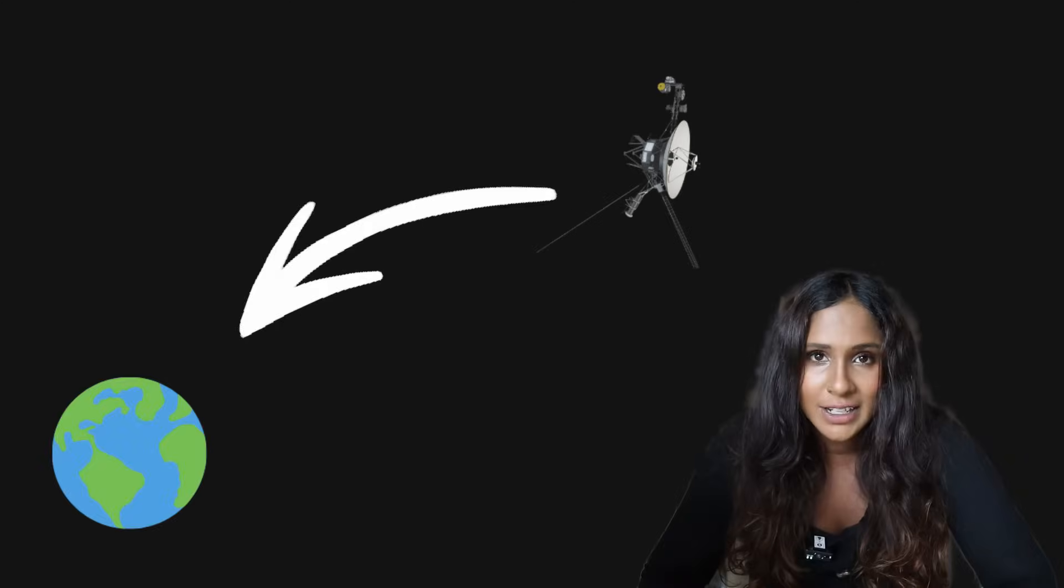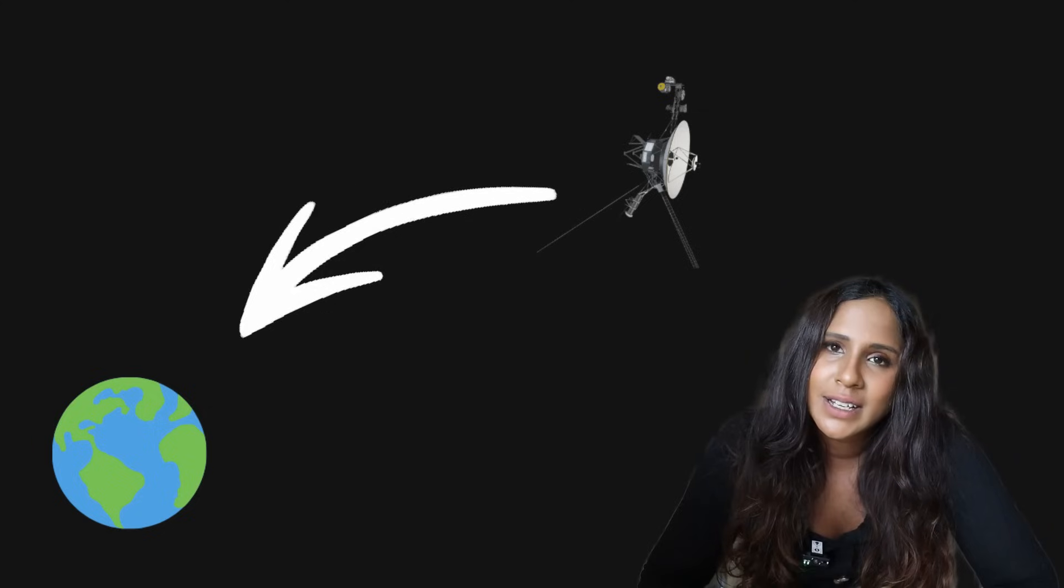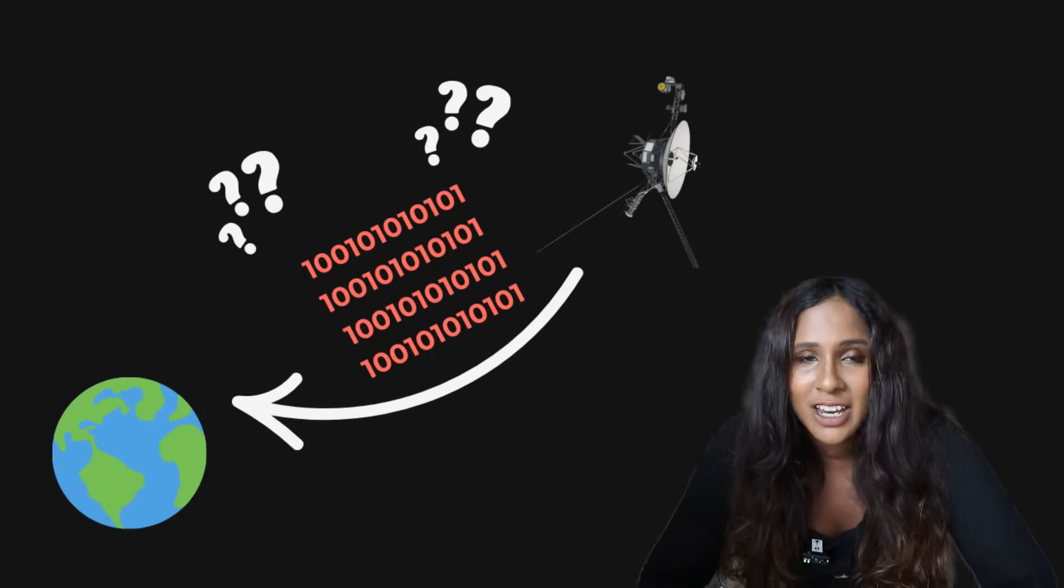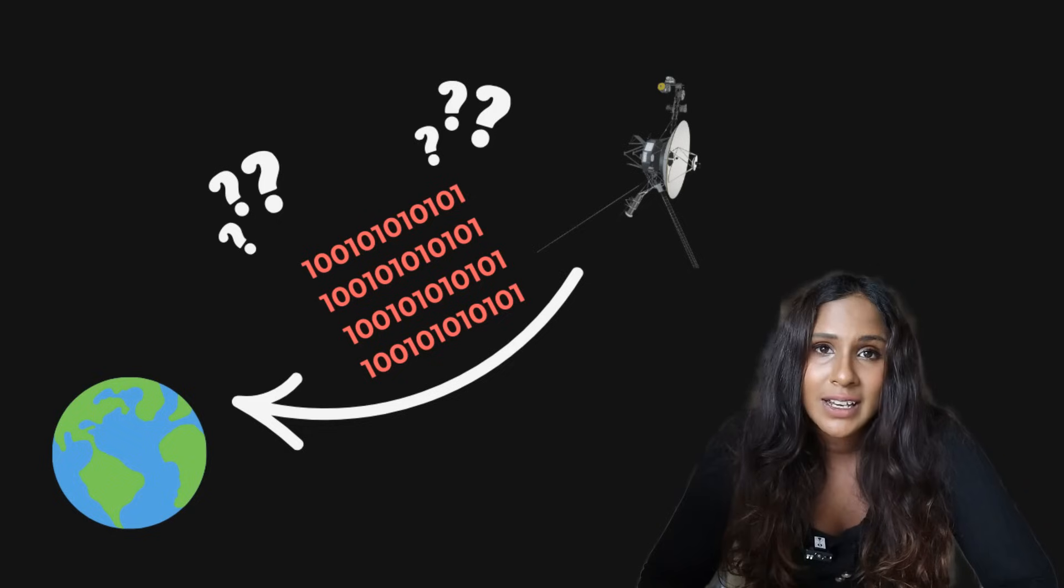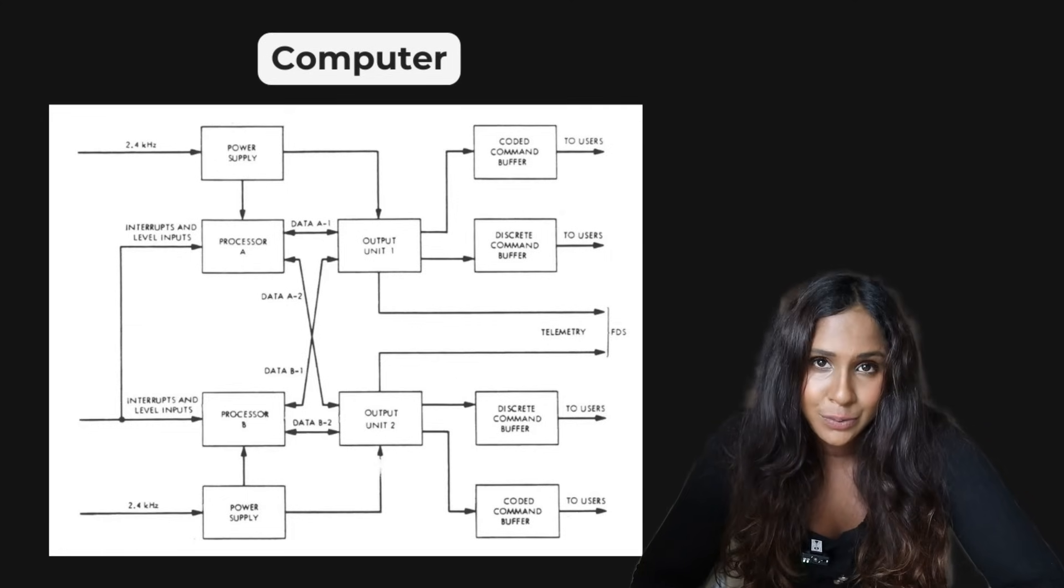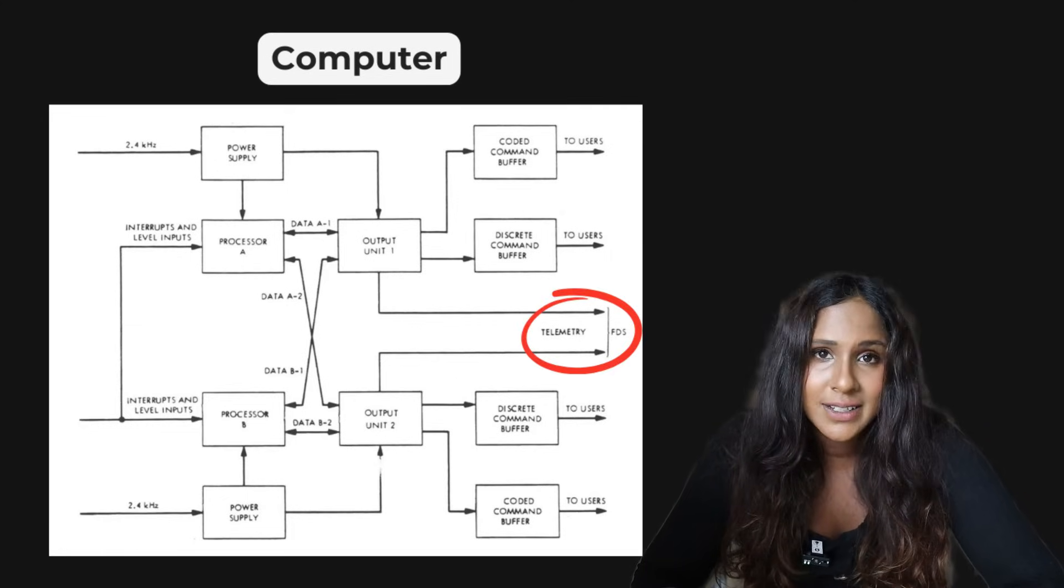So for decades, Voyager 1 has been faithfully sending data back to Earth. But in late 2023, something changed. NASA stopped receiving any meaningful communication from Voyager 1. The problem was a bug in one of the three onboard computers, specifically the flight data system.